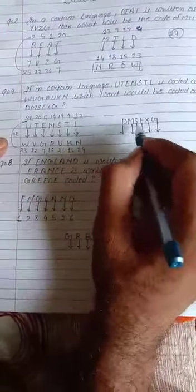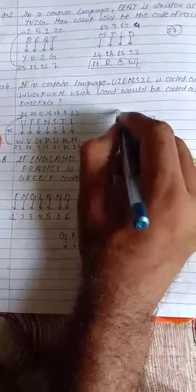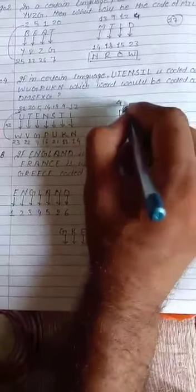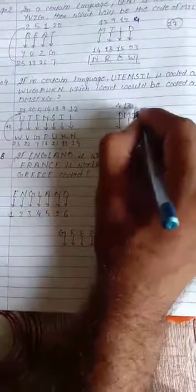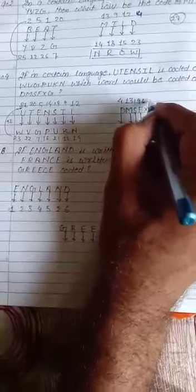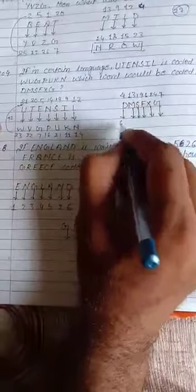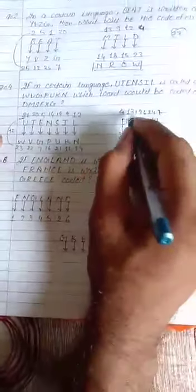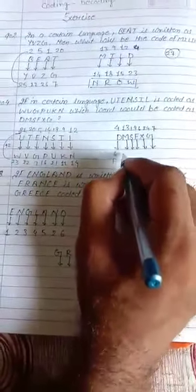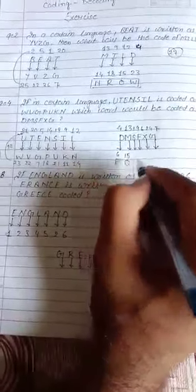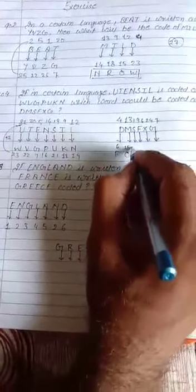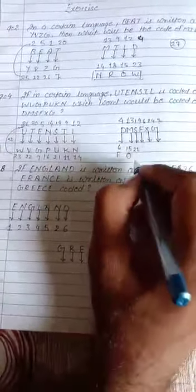we will go through with this DMSFXG. We will write the position. What is the position of D? That is 4. M is 13, S is 19, F is 6, X is 24 and G is 7. So, if we add 2 to 4, it will become 6, that is F. If we add 2 to 13, it will become 15, that is O. If we add 2 to 19, that will become 21, that is U.